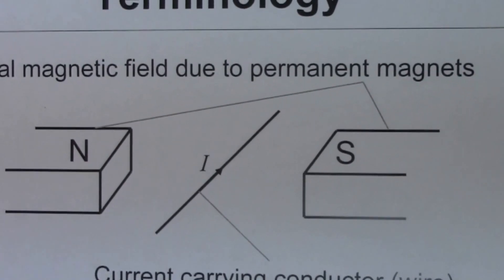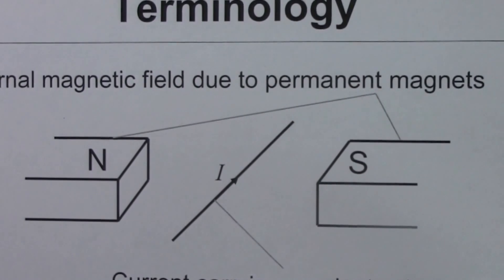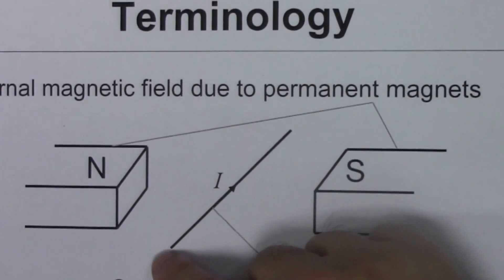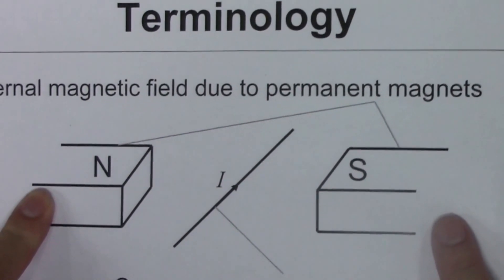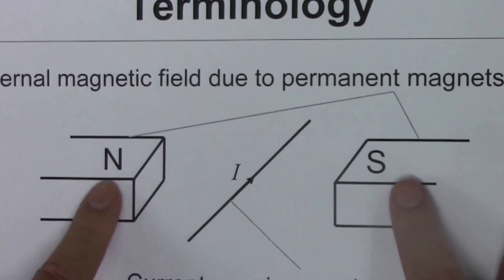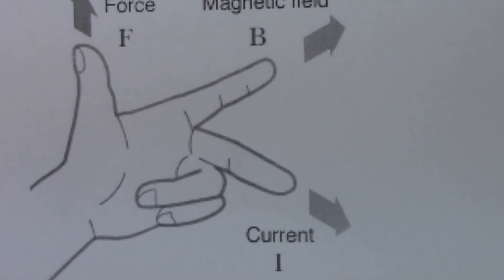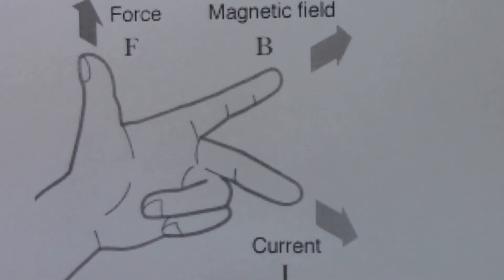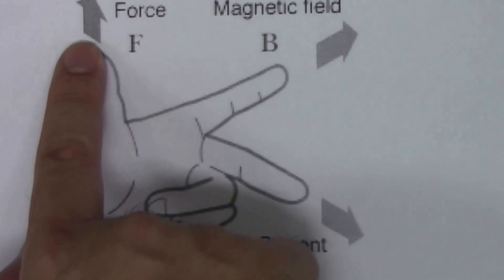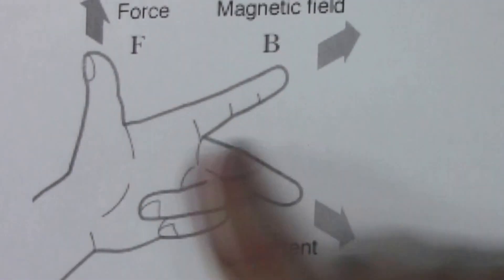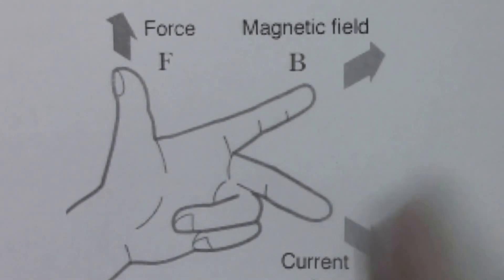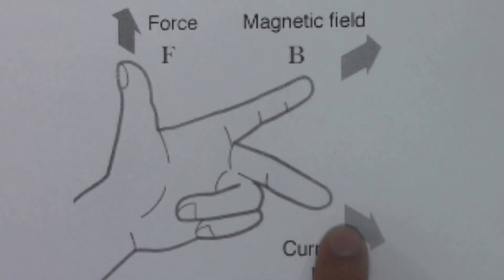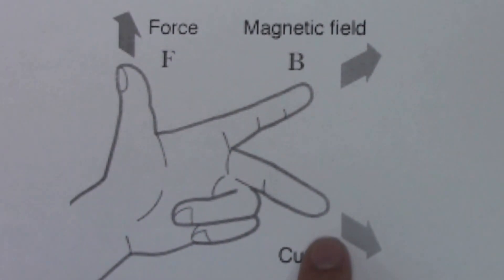To recap, the Fleming left-hand rule is used to determine the force acting on the current-carrying conductor, and there must be an external magnetic field. The thumb points to the direction of the force, the index finger points to the direction of the magnetic field, and the middle finger points to the direction of the current.